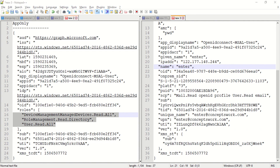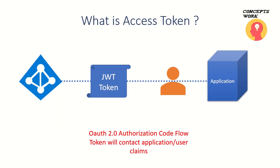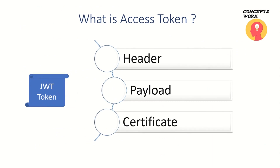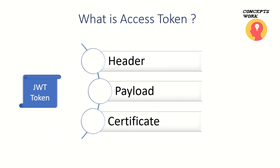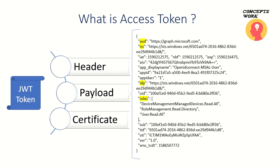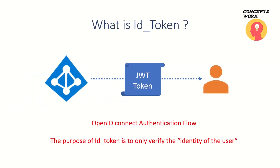The typical three components which exist in a JWT token are: the header, the payload, and the certificate verification section. It is the payload section that will have the details related to all the claims — it can be application claims only, or both application and user claims. This is how the entire access token operates.